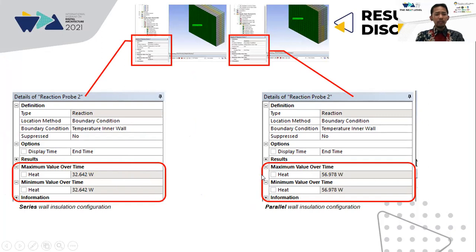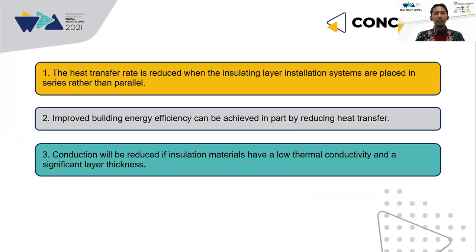In conclusion, there are several things that can be raised. First, the heat transfer rate is reduced when the insulating layer installation systems are placed in series rather than parallel. Second, improved building energy efficiency can be achieved in part by reducing heat transfer. Third, conduction will be reduced if insulation materials have a low thermal conductivity and a significant layer thickness.